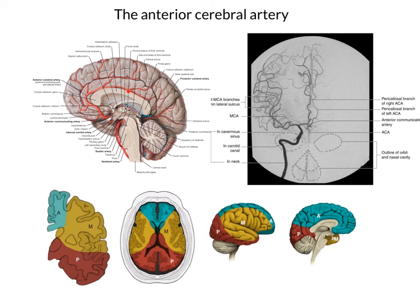Another thing to consider is sub-falcine herniation, where the cingulate gyrus is pushed under the falx cerebri — the anterior cerebral artery can get compressed in this scenario as well. So sub-falcine herniation could secondarily lead to a stroke syndrome because the anterior cerebral artery has been compressed.